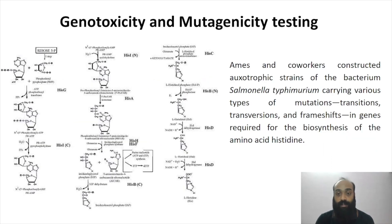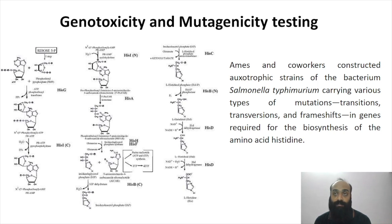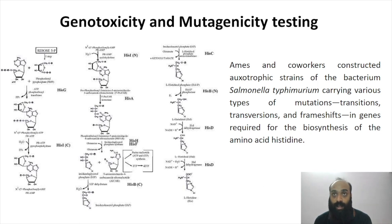The test uses Salmonella typhimurium — but not normal Salmonella typhimurium. It is a Salmonella strain carrying mutations in the genes required to make histidine, so the bacteria are unable to make histidine on their own. Normally, bacteria synthesize histidine via biochemical processes using genes in their DNA, but these mutant strains carry mutations in certain genes whose products are enzymes required for histidine biosynthesis, so histidine is never produced.